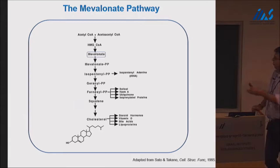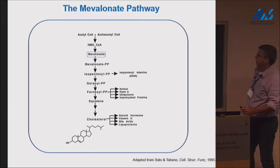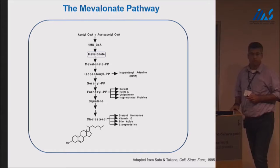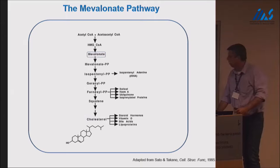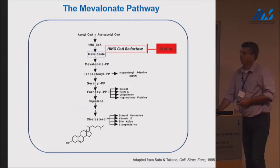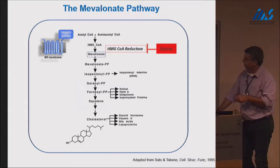My first encounter with the ubiquitin system involved cholesterol metabolism. I was a PhD student at Tel Aviv University, studying cholesterol biosynthesis in what we call the mevalonate pathway. The first committed step for cholesterol is the formation of mevalonic acid, catalyzed by HMG CoA reductase. Most drugs aiming to reduce cholesterol levels — generally called statins — target the activity of this enzyme. HMG CoA reductase resides in the ER membrane, spanning it eight times with the catalytic domain facing the cytosol.